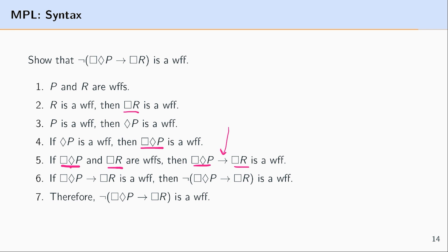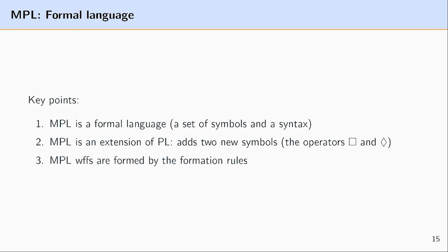A couple of key points to keep in mind: first, modal propositional logic is a formal language, meaning it has a set of symbols and a syntax. Second, since modal propositional logic is an extension of propositional logic, it includes all of propositional logic and adds two new symbols — the box for necessity and the diamond for possibility. Lastly, modal propositional logic WFFs are created in the same way as propositional logic WFFs — through a set of formation rules.